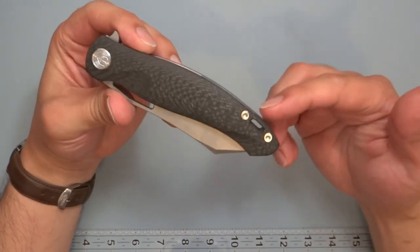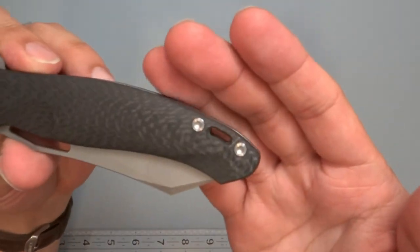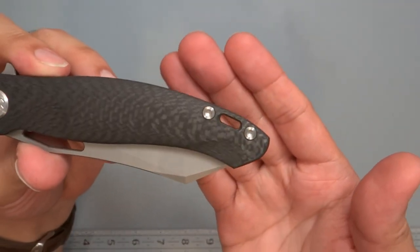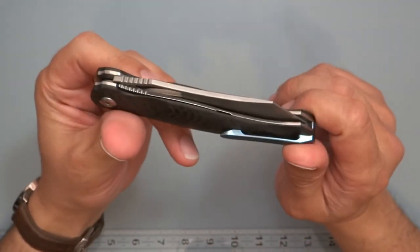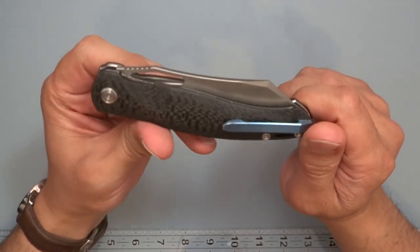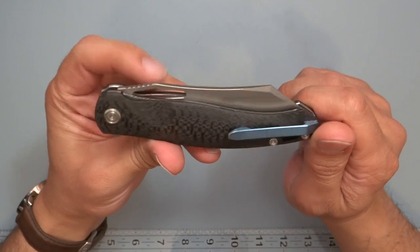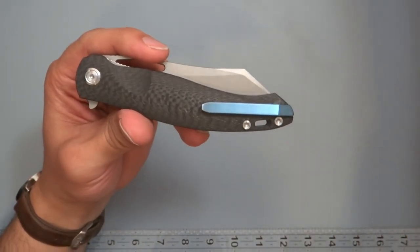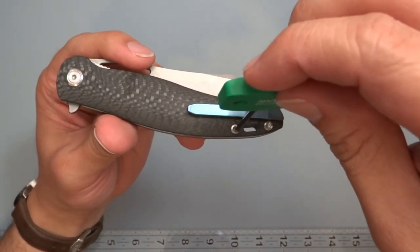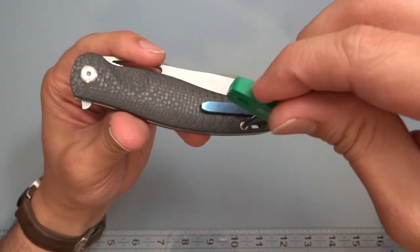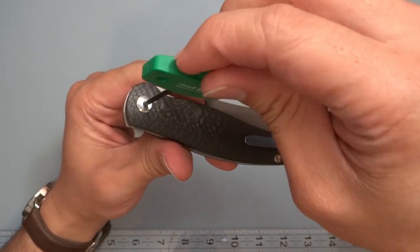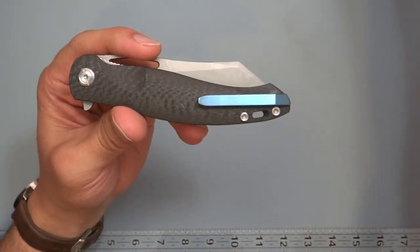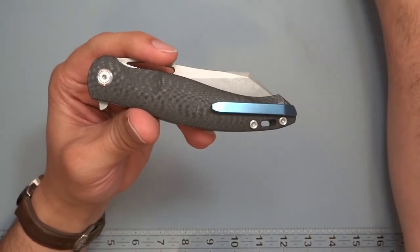I never use lanyard holes, but it is something that's there for you if you actually do like a lanyard. That is something that's available for you. But this one also seems to have T8 all the way around. So I did not disassemble it, but it does have T8 all the way around. So that's something that some people look for in a knife, especially one that you're going to be taking apart.